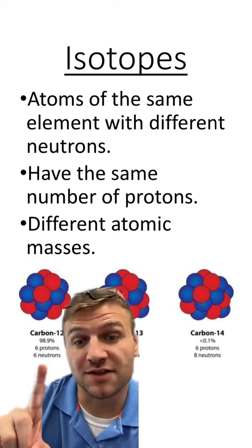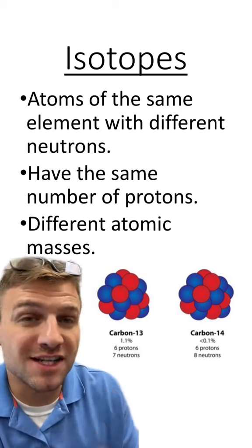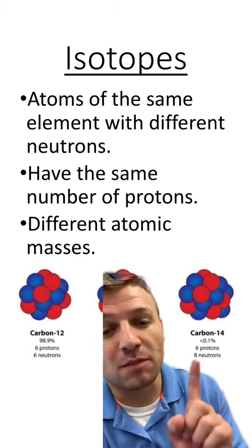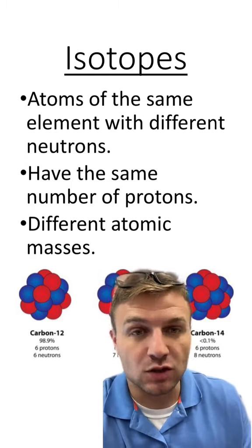For carbon-12, there are six protons and six neutrons, which means it's going to have an atomic mass of 12. Carbon-13 will have six protons and seven neutrons, which means its atomic mass is 13. And carbon-14 has six protons and eight neutrons, which means its atomic mass will be 14.